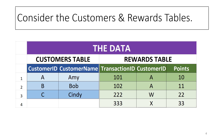The rewards table has three columns: transaction ID, customer ID, and points, which are the reward points earned by the customer. As you can see, customer Amy has two rewards transactions with transaction IDs 101 and 102. The other two customers in the customers table do not have any transactions at all in the rewards table.